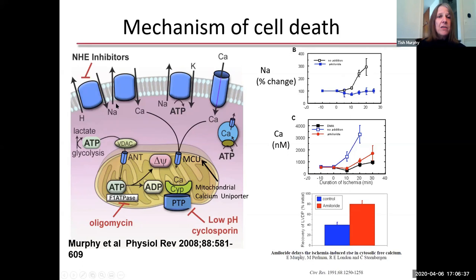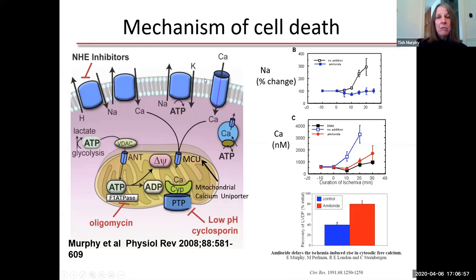The increase in sodium stimulated the plasma membrane sodium-calcium exchanger, leading to an increase in calcium which occurs during ischemia. To test this hypothesis, we added sodium-proton exchange inhibitors. When we did that, we largely blocked the increase in sodium and attenuated the increase in calcium, and this was cardioprotective. We had improved recovery of function and smaller infarcts, suggesting this pathway played a major role in bringing calcium into the heart and initiating cell death.